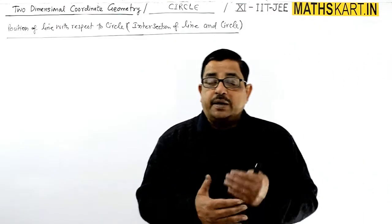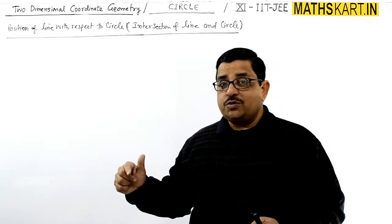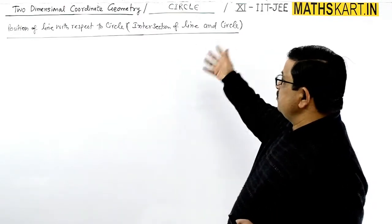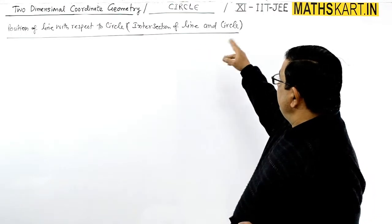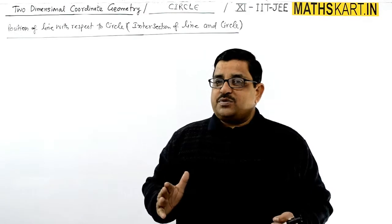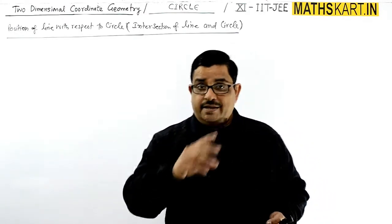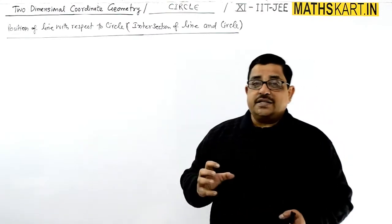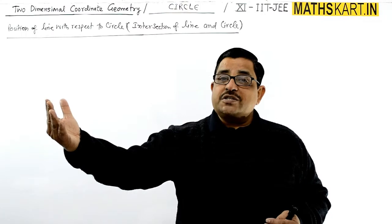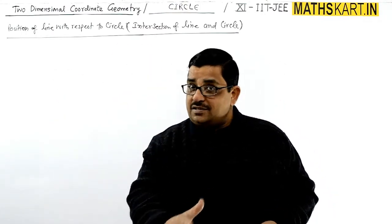Our next application is the position of a line with respect to a circle. In second language we also say intersection of line and circle — or more precisely, interaction of circle and line. The line can be far away from the circle, touching the circle, or intersecting the circle.